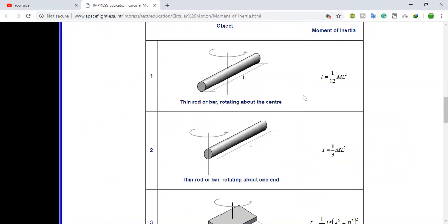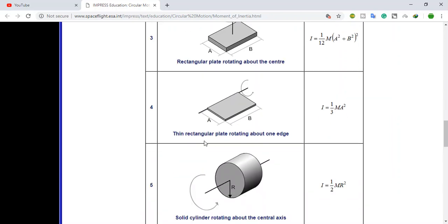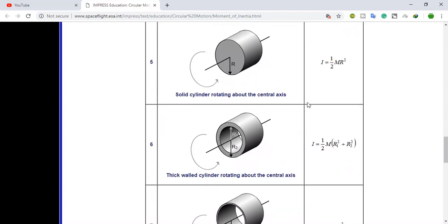There are many formulas for moment of inertia: for thin rod or bar rotating about the center, I equals 1 by 12 ml square; for thin rod bar rotating about one end, I equals ml square by 3; for rectangular, I equals m by 12 into a square plus b square whole square, where this is side a and this side will be b.